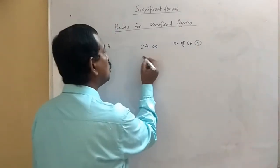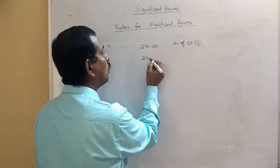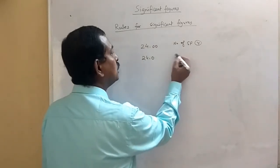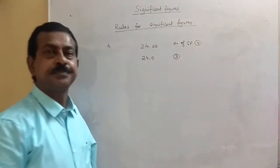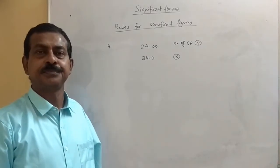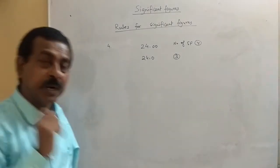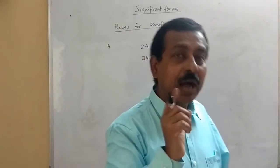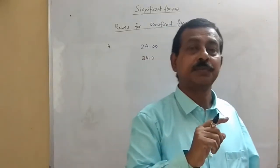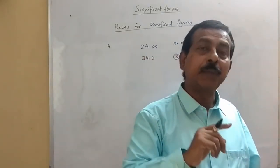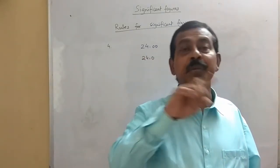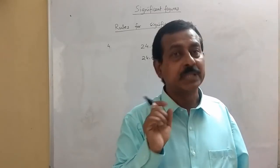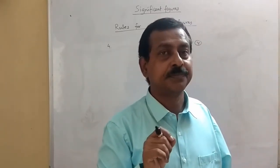If it is 4.0, it will be 3 significant figures. But zeros after the decimal that appear in the beginning of the number are non-significant.